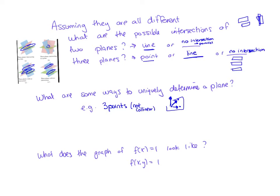If the three points happen to all be on the same line, then right — if I just have three collinear points, there's a whole bunch of different planes that all go through that line. So we could have multiple planes through those three points if they're all in the same line.